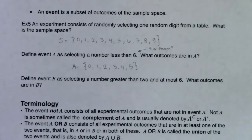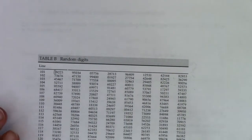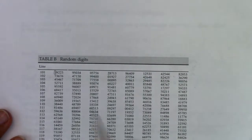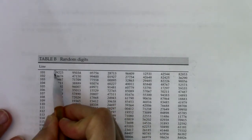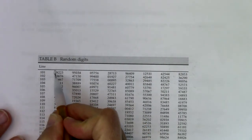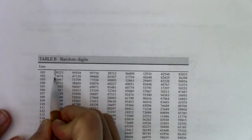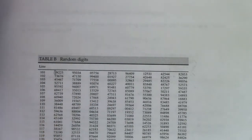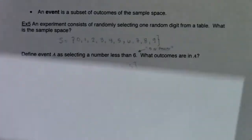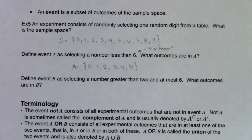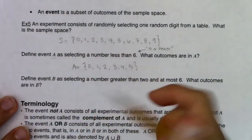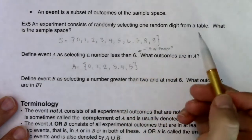If we go back to line 101 and pick one digit at a time, and that digit was one, that outcome is in event A because one is in A. If we started at line 102, the first digit would have been a 7, which is not in event A. An outcome can be in the event or not — we just need to answer that question. So 0 through 5 are in A; 6, 7, 8, and 9 are not.